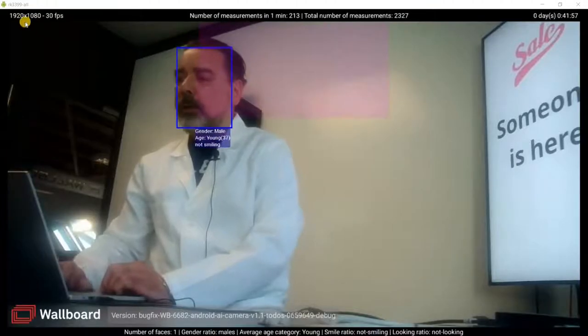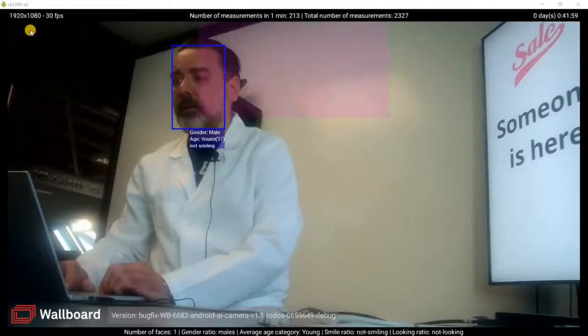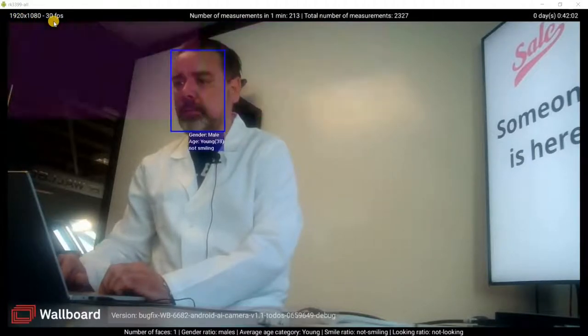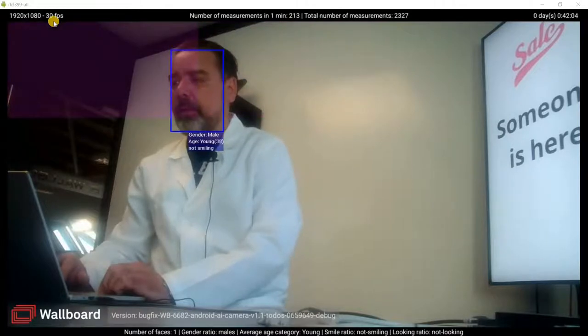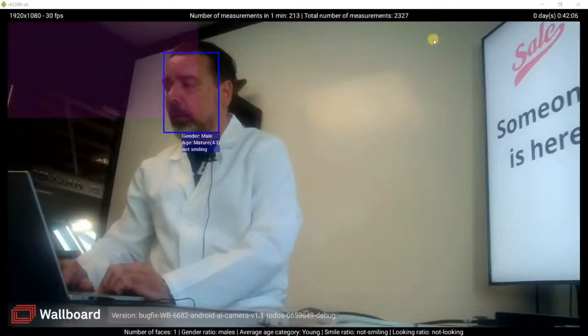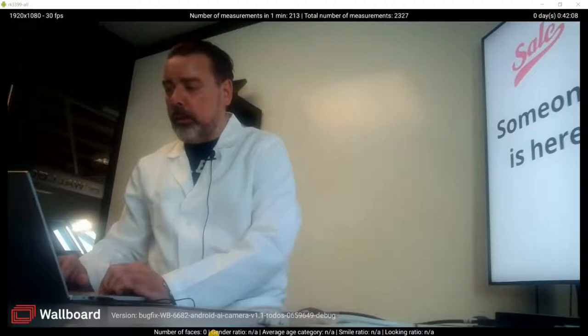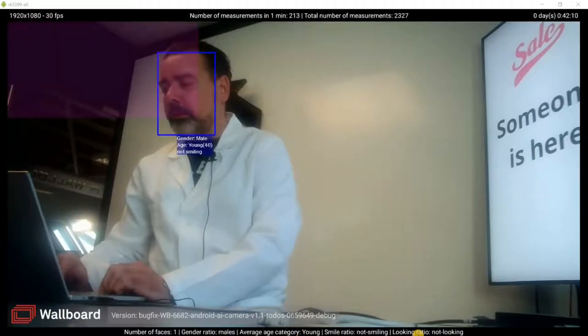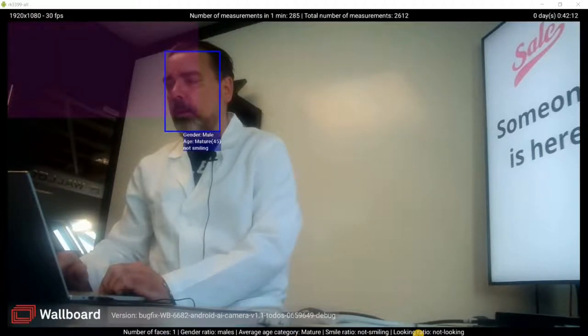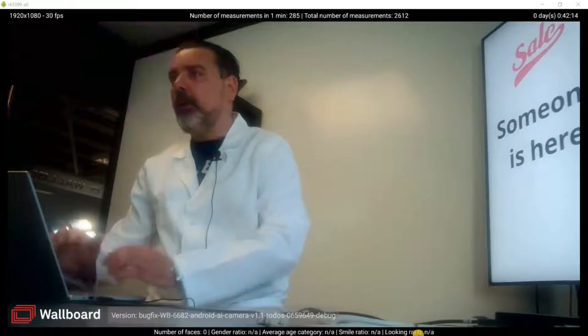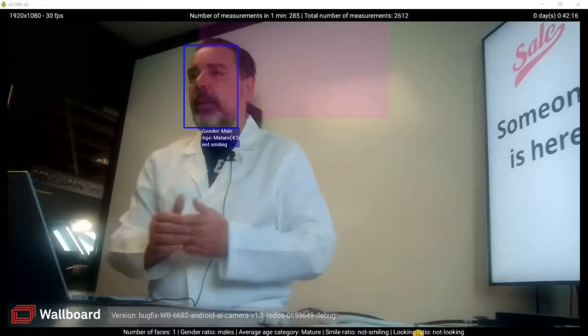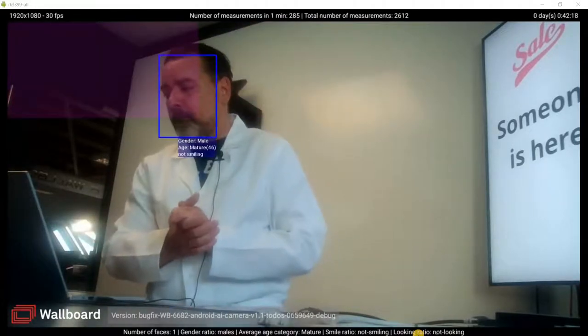Here on the top you can see that the camera resolution is full HD and it is doing 30 frames per second calculation speed. Here on the bottom you can always see what is the actual male and gender average.